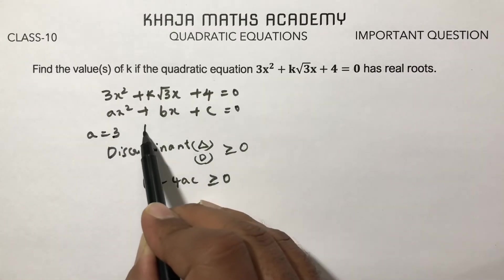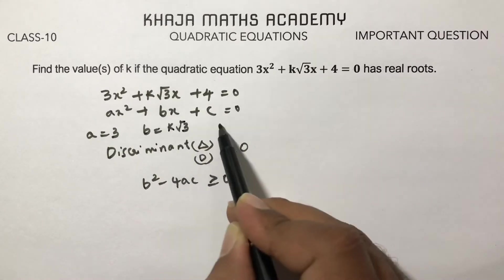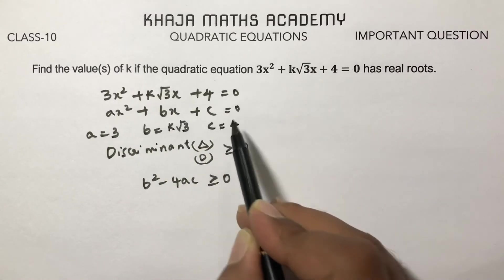Here a = 3, b is the coefficient of x so b = k√3, and the value of c is 4.